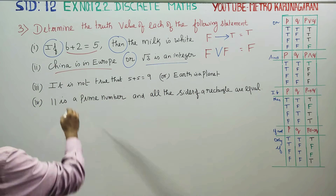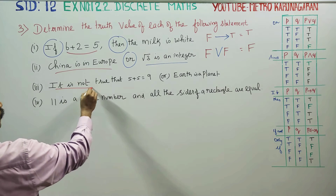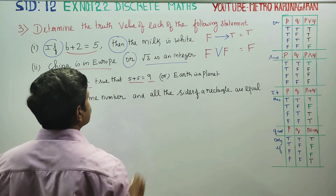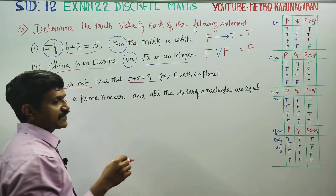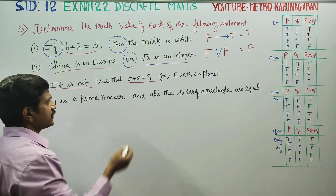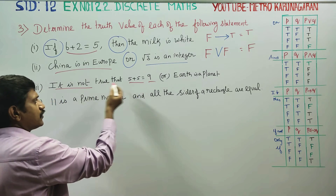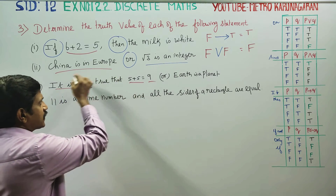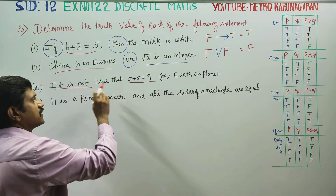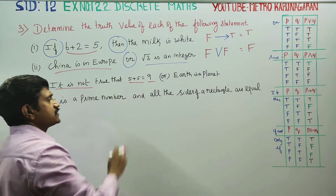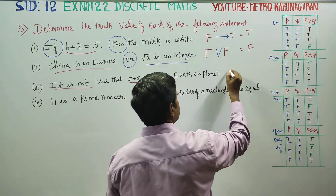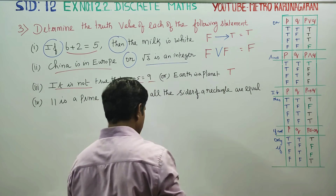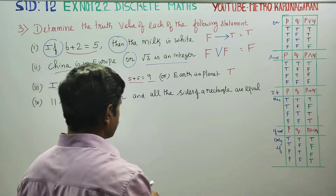Next statement: 5 plus 5 is 9 — this is not true, it is false. But 5 plus 5 is 10, so the negation: it is not true that 5+5=9. This is a correct, true statement.